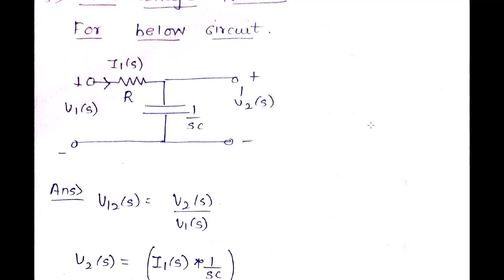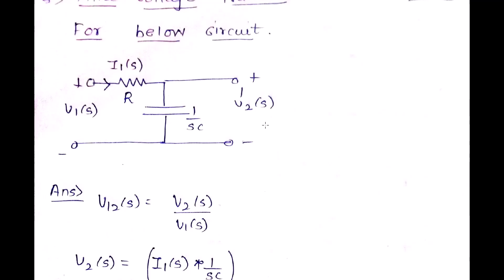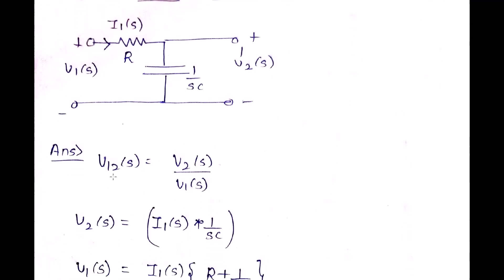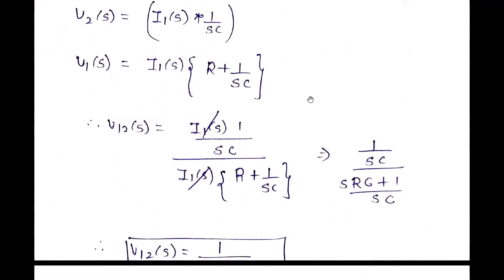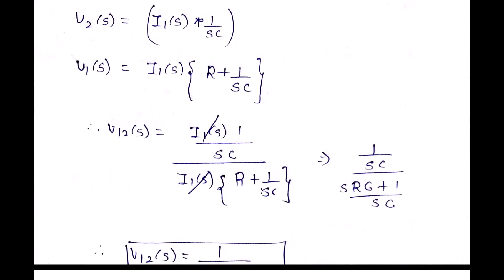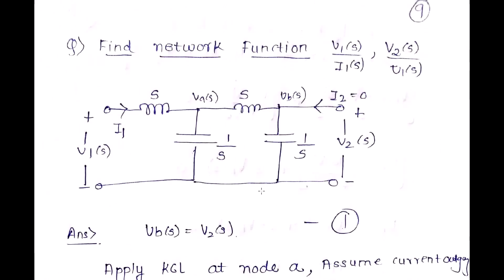To summarize the approach: for a driving point function (single port), find the impedance or other parameter at that port alone. For a transfer function (both ports involved), first break the expression into numerator/denominator format. Find V2(s) as the voltage across the capacitor and V1(s) as the sum of voltage drops across R and C, then compute V2(s) / V1(s).